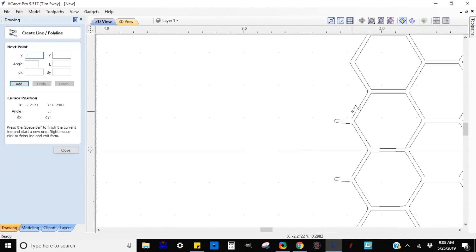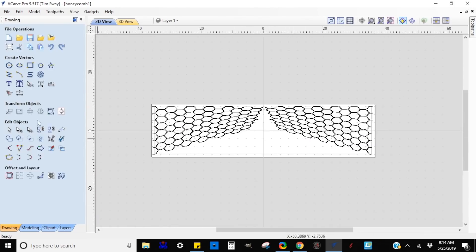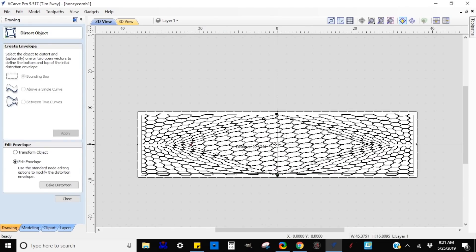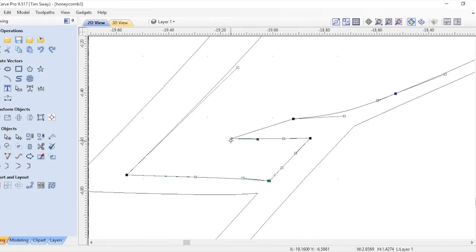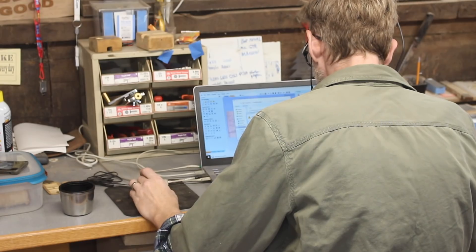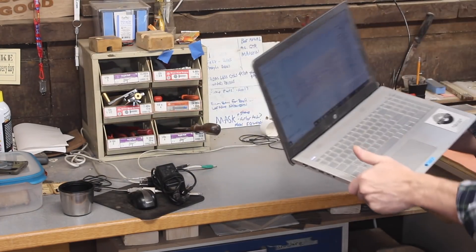I used VCarve Pro by Vectric to make this design. And I started by just finding a simple honeycomb shape online. Converting it to a vector. And then using the Vectric's distort tool to experiment with sort of bending the shape to make it kind of get squished in and out. And I did a lot of experimenting with this until I finally settled on a design that I liked. So now I'm ready to cut.